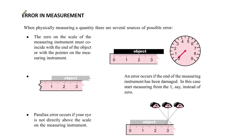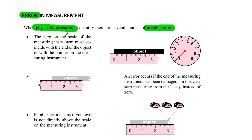In this topic we're going to look at the errors that can occur when we measure an item — physically measuring something, taking a ruler for example. One error is that the zero on the scale of the measuring instrument must coincide with the end of the object. If that is out in any way, then we're going to have mistakes.